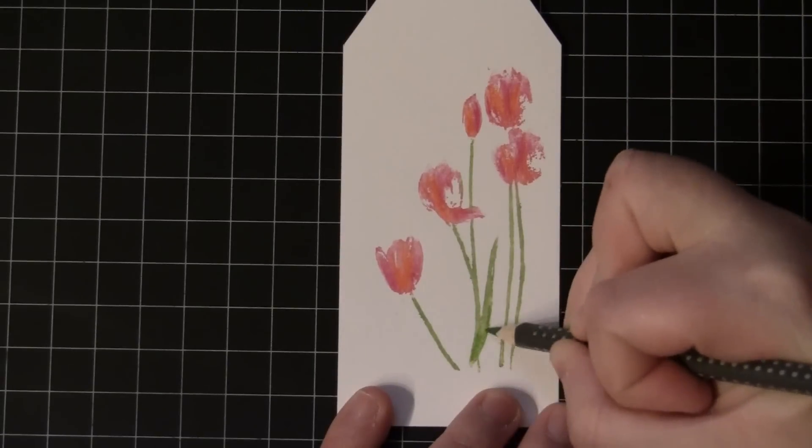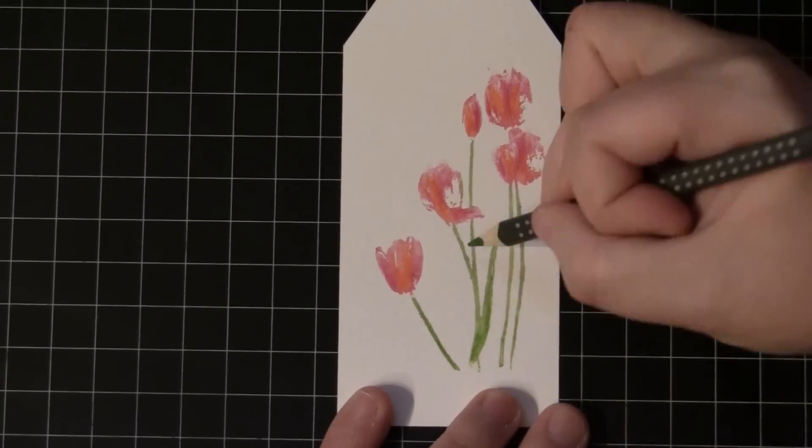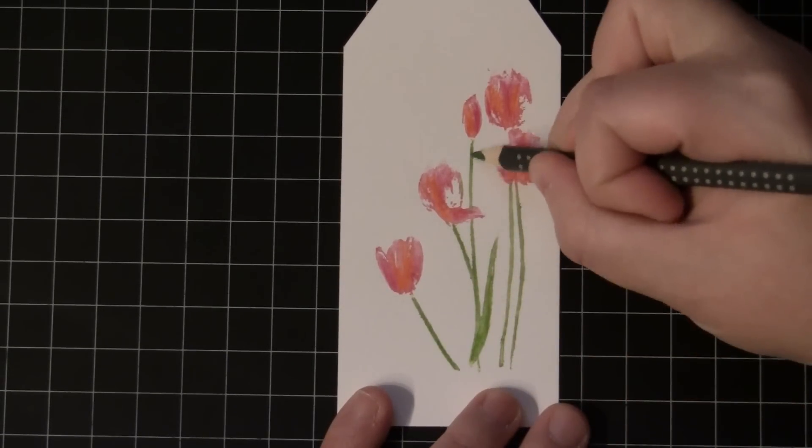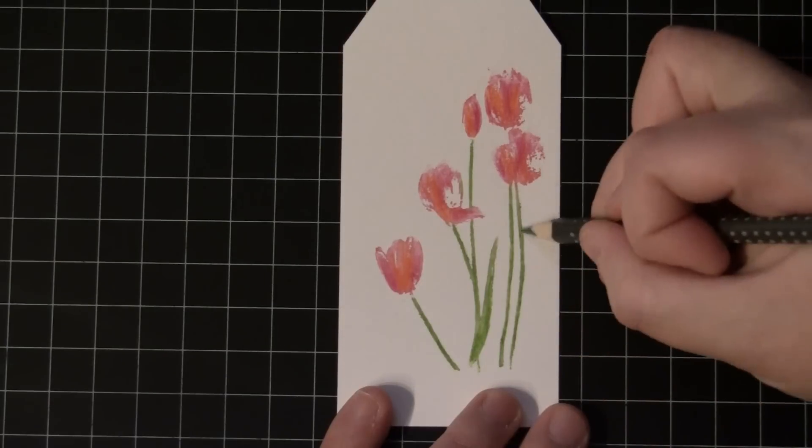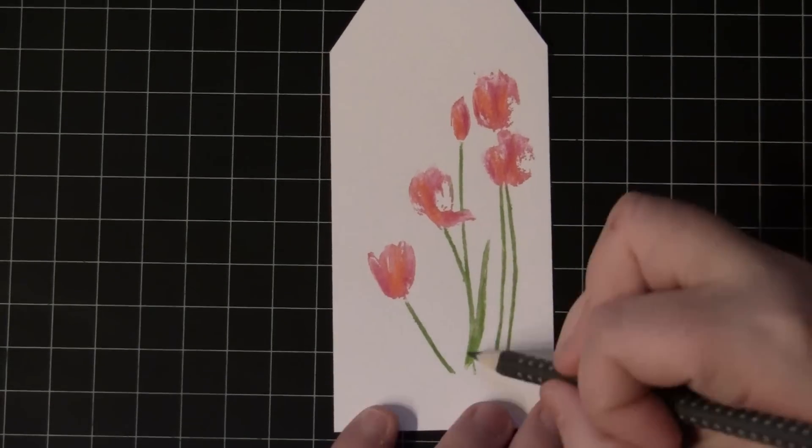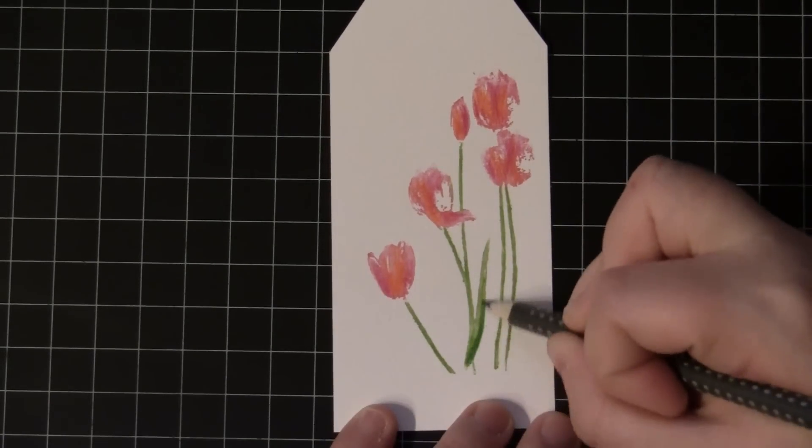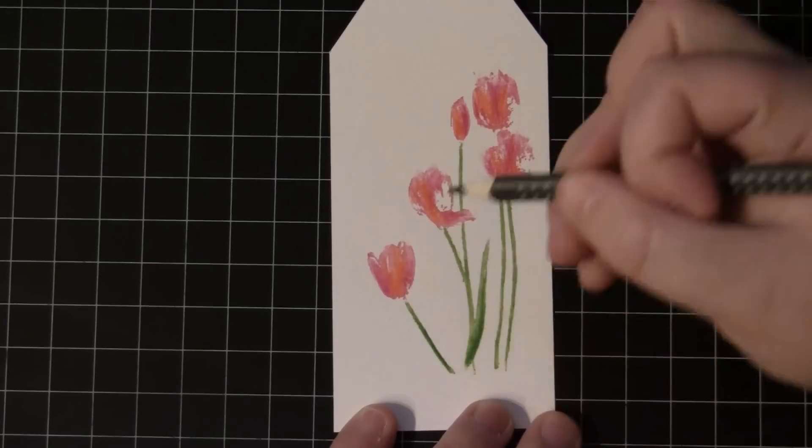And then I'm also going to do that on the stems. So I'm taking just a little bit darker green, and then a second color of green to darken it up just a little bit more.